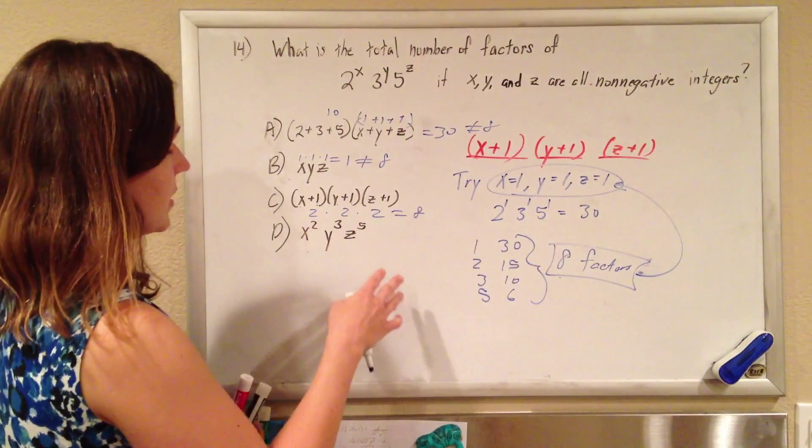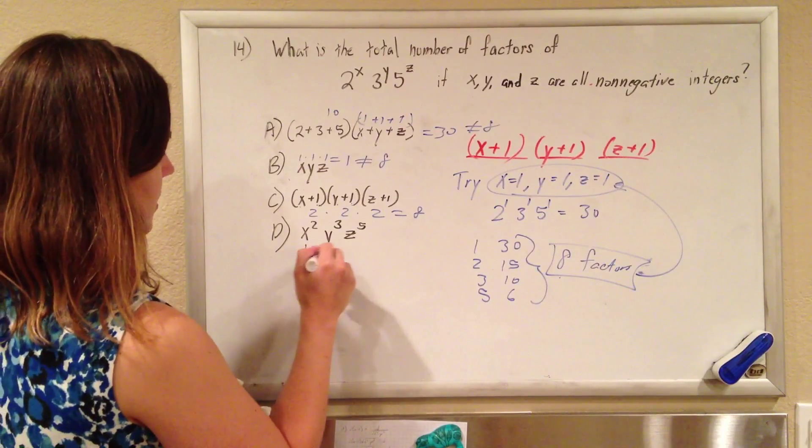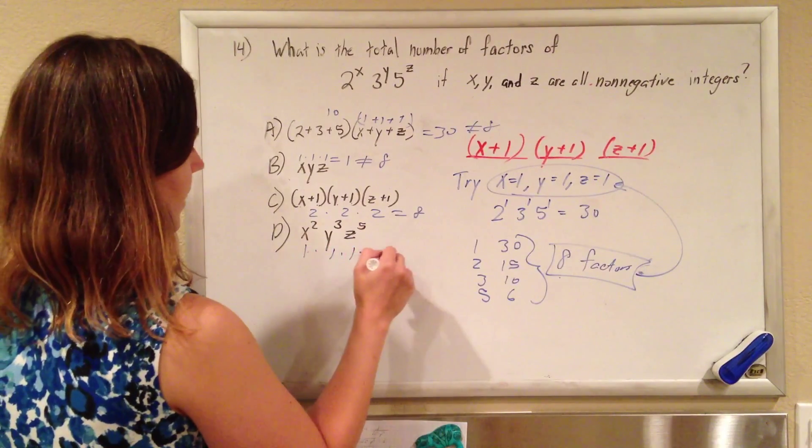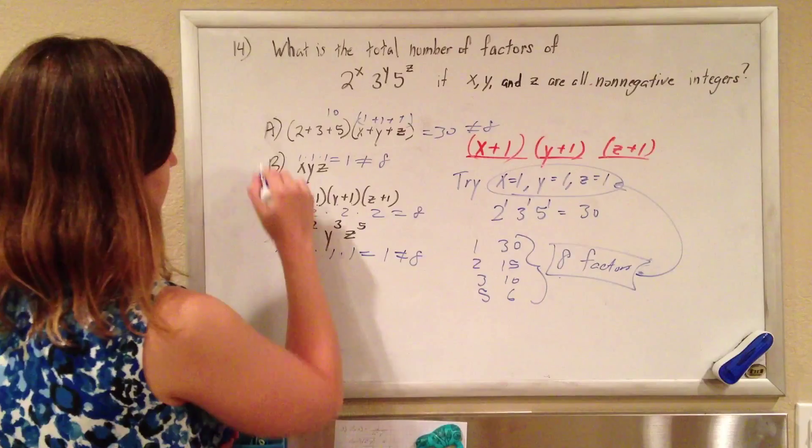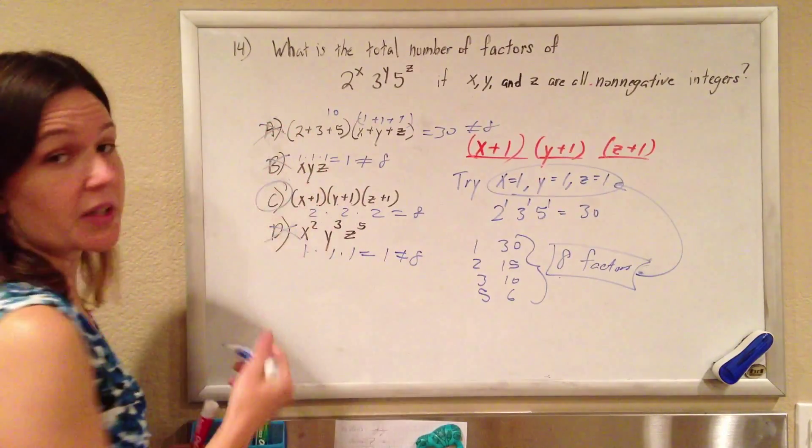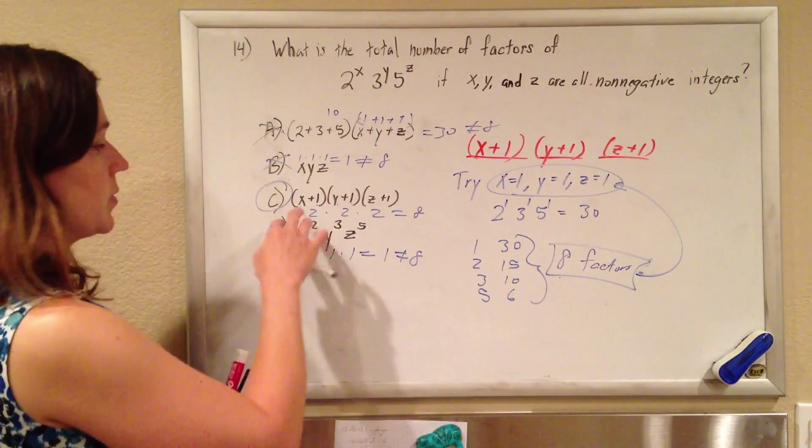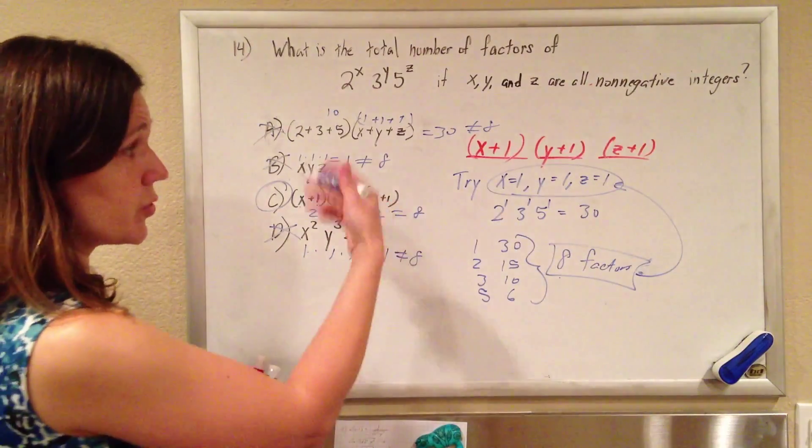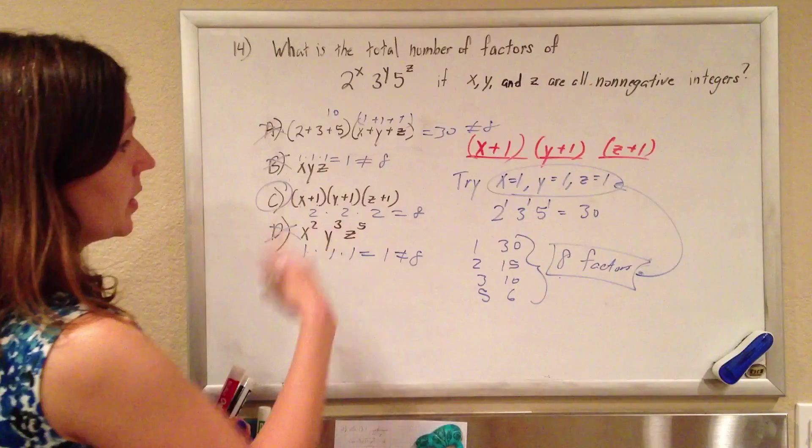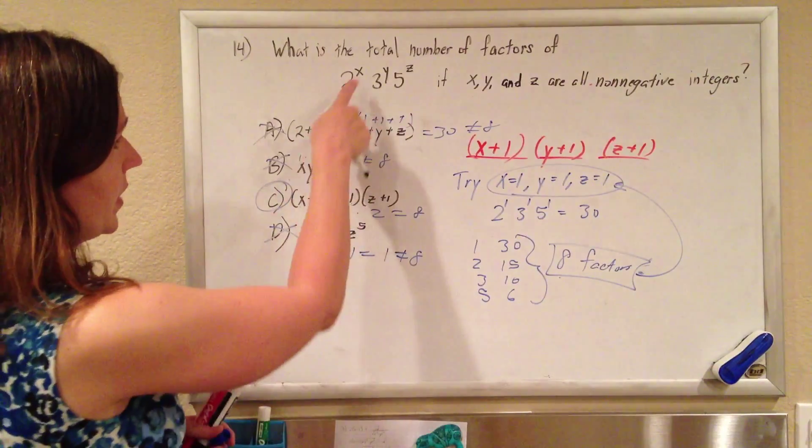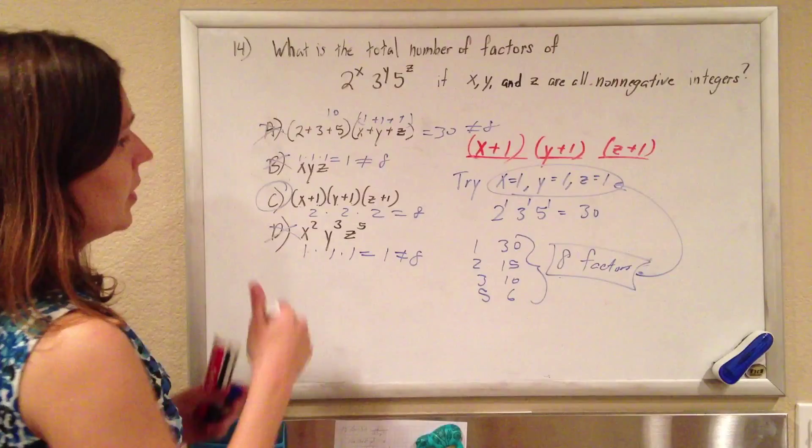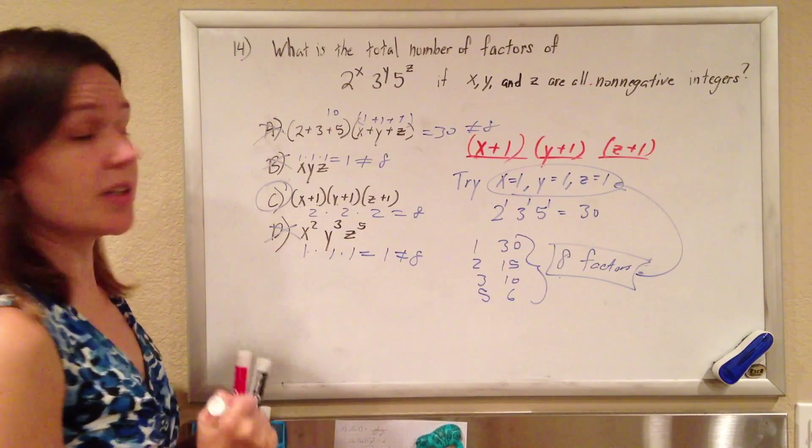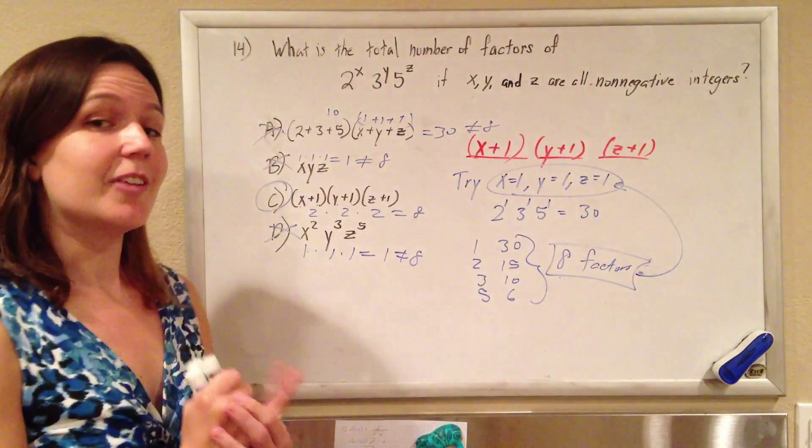We haven't proved it yet, but if this guy doesn't work, this is 1 times 1 times 1. That's 1, which is not 8. And by the process of elimination, it must be C. If we trust that one of these works, it does have to be this one. And so you can try it, the same process with any numbers you choose. Zeroes work nicely. You can even keep maybe like a 2 and a 1 and a 1 and just play with it. It will work every time.